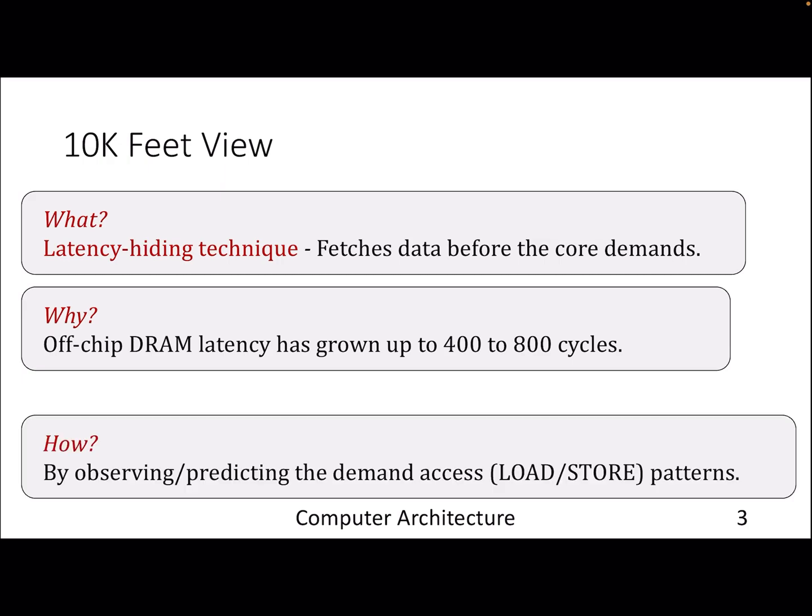How does this work? You can assume it's just a speculation technique like your branch predictor, but here it speculates the future accesses that will be generated by a particular application. Based on that, it fetches the data from DRAM or from the next level before time.